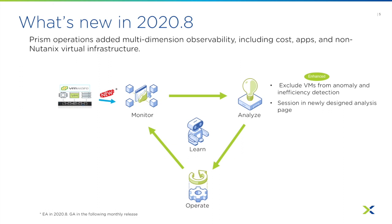We're going to continue enhancing the machine learning capabilities and the cross-play automation platform. In this release, we're introducing import and export capabilities so you can save your playbooks for backup or for moving them into different Prism Central instances.